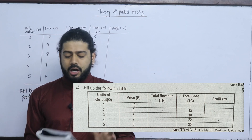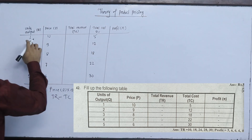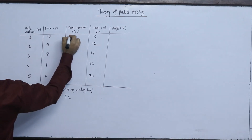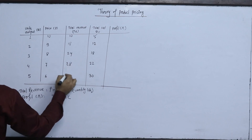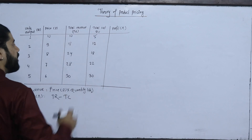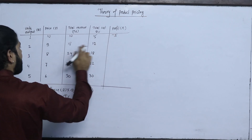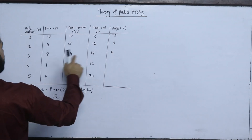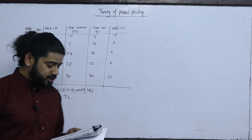Revenue is price into quantity — P into Q. Total revenue: 10 into 1 is 10; 9 into 2 is 18; 8 into 3 is 24; 7 into 4 is 28; 6 into 5 is 30. Profit is revenue minus cost: 10 minus 5 is 5; 18 minus 12 is 6; 24 minus 18 is 6; 28 minus 22 is 6; 30 minus 30 is 0.